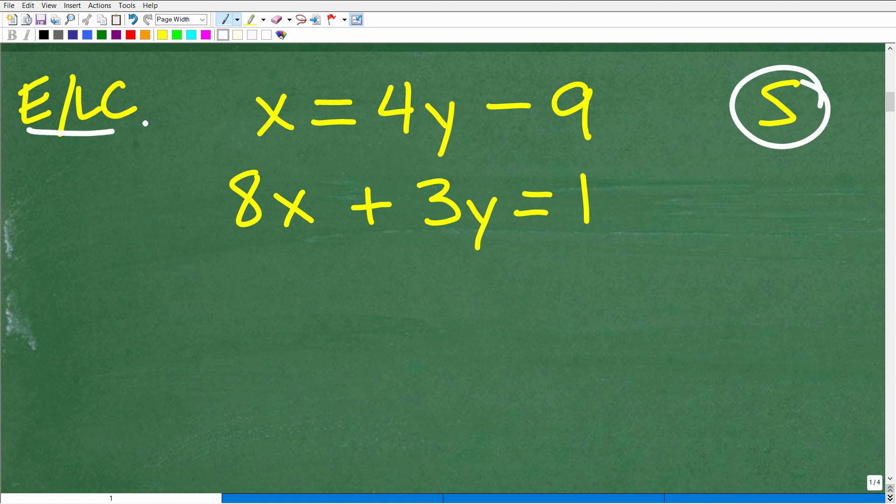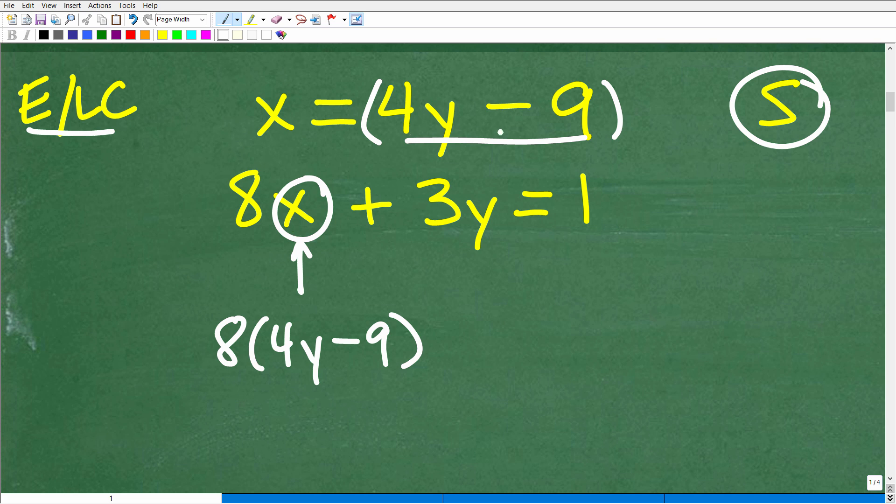So X is equal to, we want to put some parentheses around that, four Y minus nine. So this is what X is equal to. So again, the idea here is to write one equation in one variable. So what I can do is replace this X with four Y minus nine. So we can create a new equation that would be eight times four Y minus nine. We're substituting, i.e. the substitution method, this X with this expression here, because X and this are the same thing, plus three Y is equal to one. Now I have one equation in one variable.